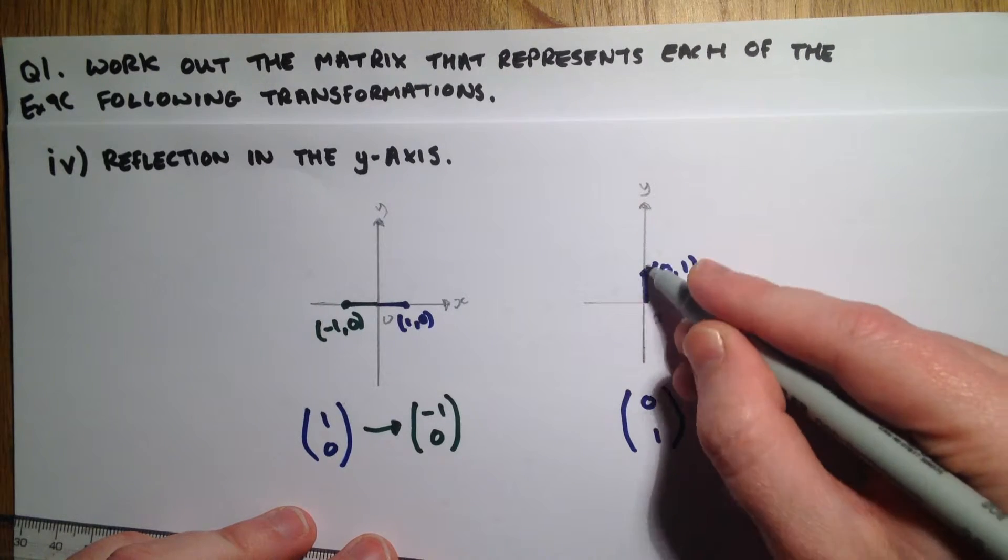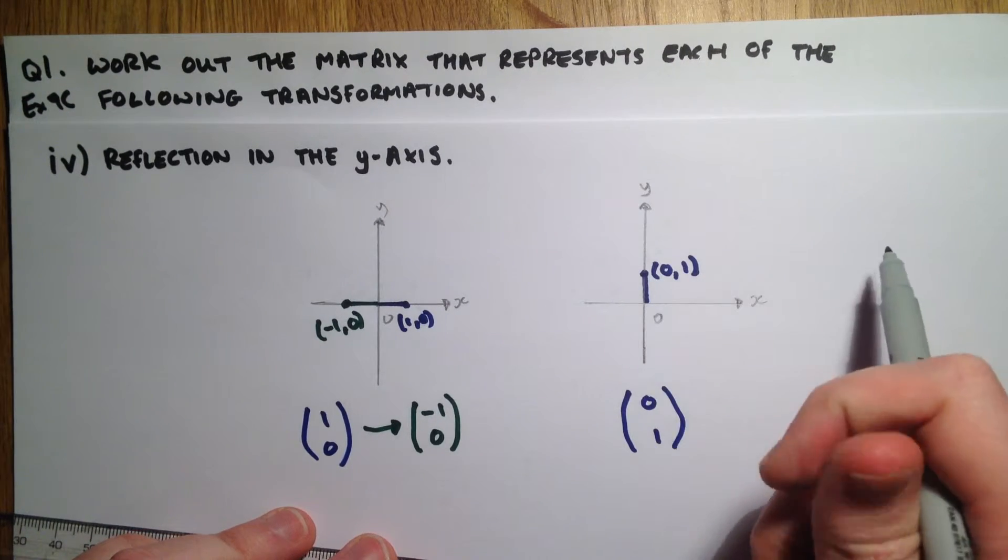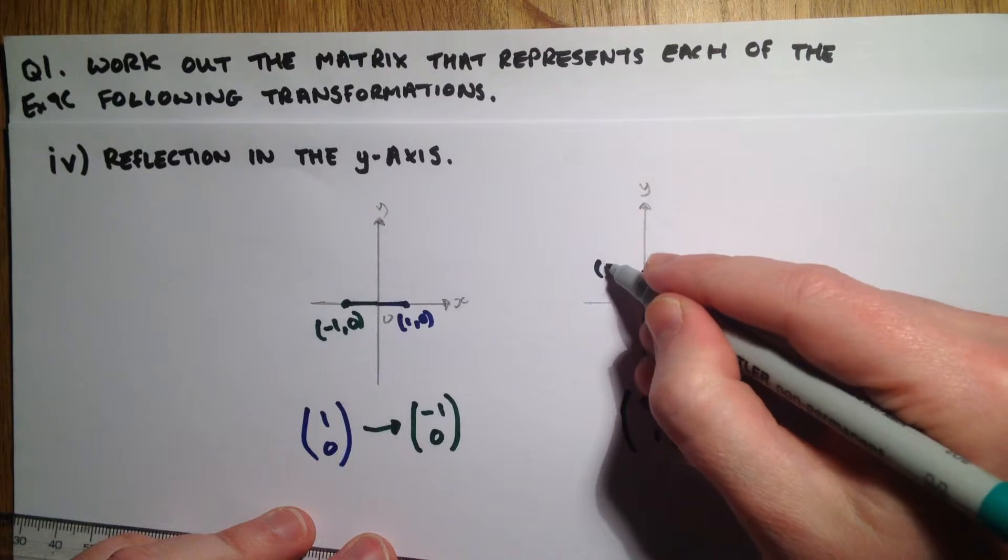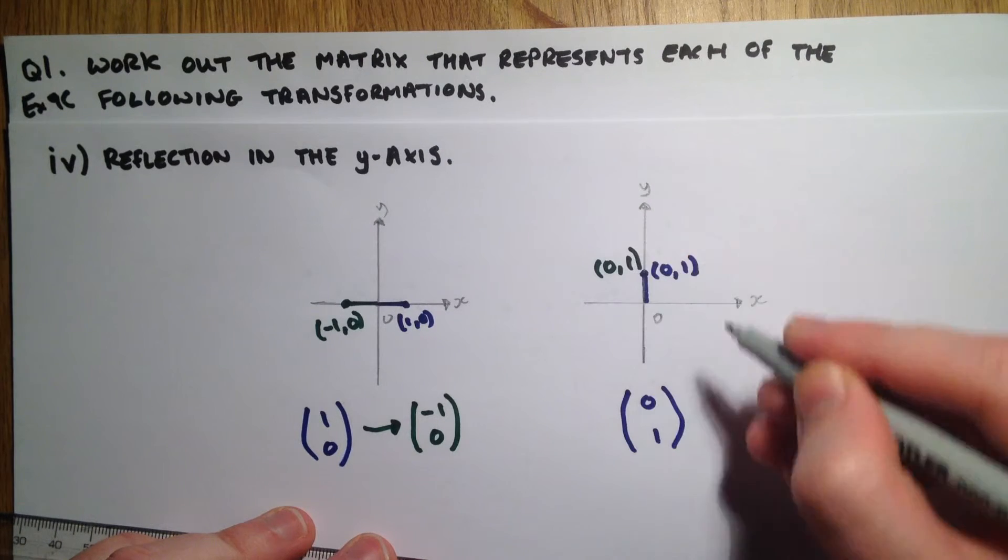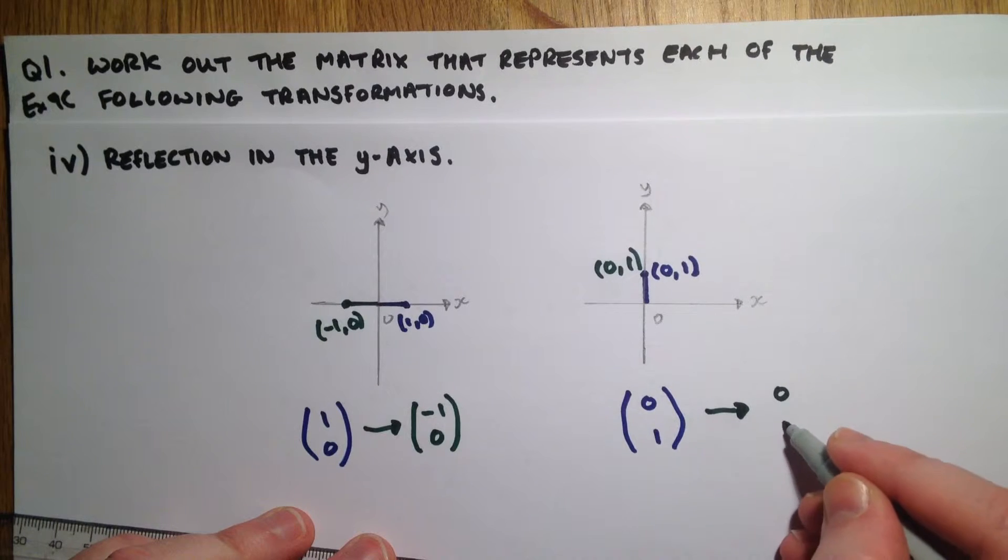This one, now this is on the y-axis, so if that line flips, it's just going to be exactly the same, so it is still going to be zero one when we flip it. So that is going to become zero one.